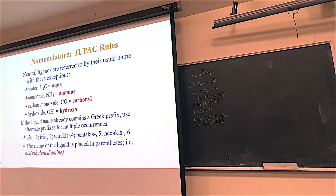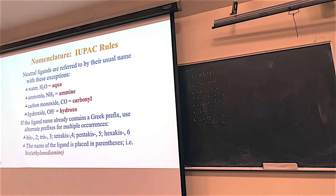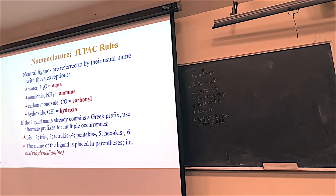For example, ethylenediamine was one of the compounds that has two teeth to connect. Well, 'di' is a Greek prefix in ethylenediamine. So if you had two ethylenediamines, you'd say diethylenediamine — and that is confusing. That's when you'd use the alternate form: bis, tris, tetrakis. Bis means two. Bis(ethylenediamine) would be the way to refer to two of these. I don't expect you to become experts at this, but I want you to recognize these names when you see them and be able to interpret them.